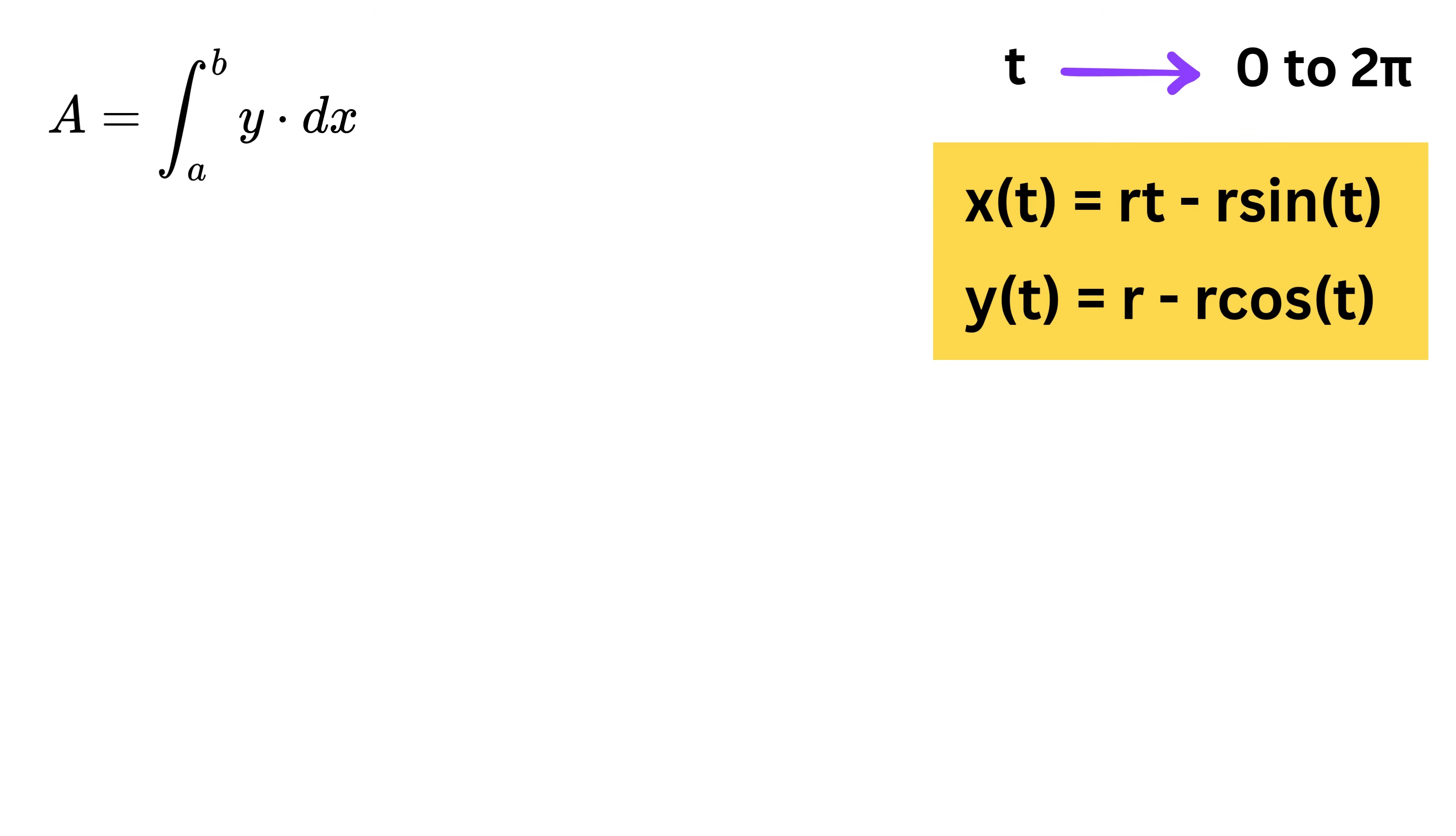When x and y are both functions of T, the differential dx can be written as the derivative of x with respect to T times dt, and we evaluate that from T equals 0 to T equals 2 times pi. This is a straightforward change of variable in the integral.